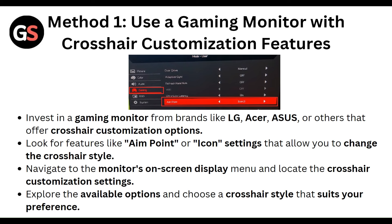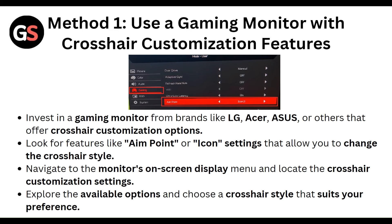Look for a feature like aim point, icon, or setting that allows you to change the crosshair style. Then navigate to the monitor's on-screen display menu, locate the crosshair customization setting, explore all available options, and choose the crosshair style that suits your preference.